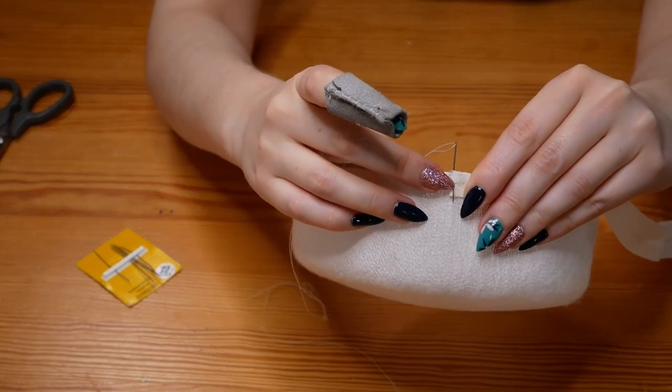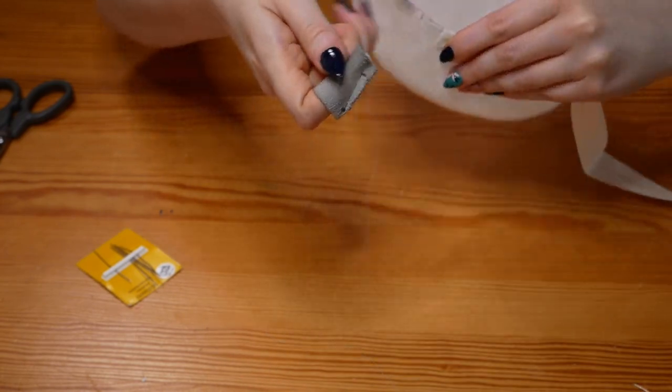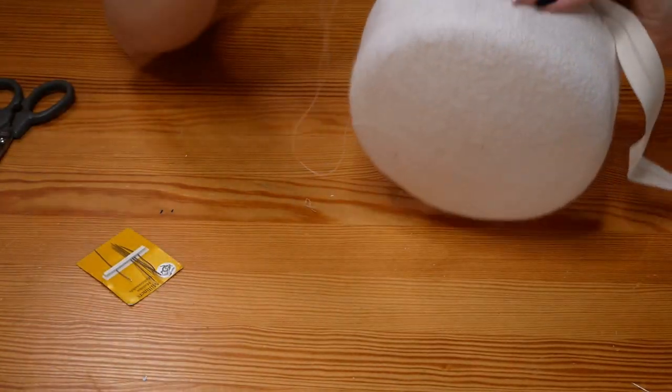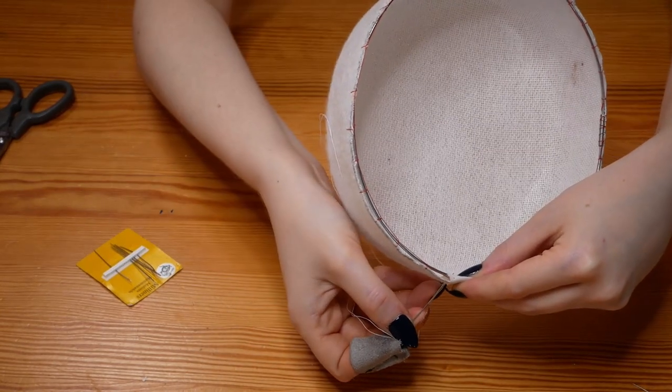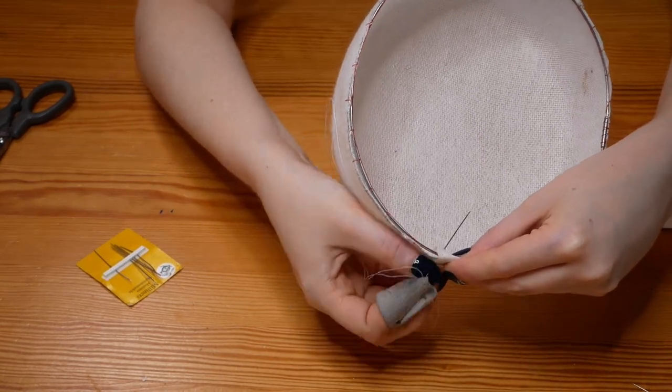Then sew it into place using stab stitches. To do this, poke the needle through from the inside, travel about 2mm backwards on the outside, then travel forwards about 2cm on the inside, and repeat.